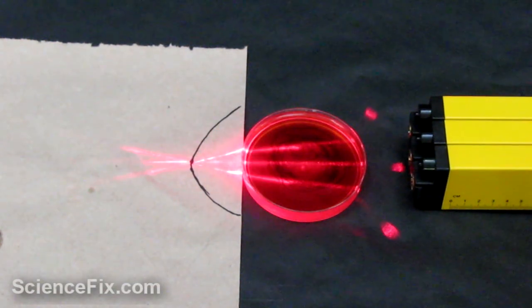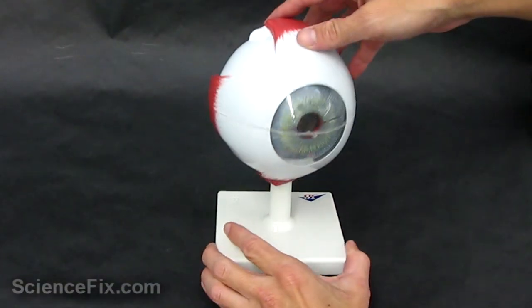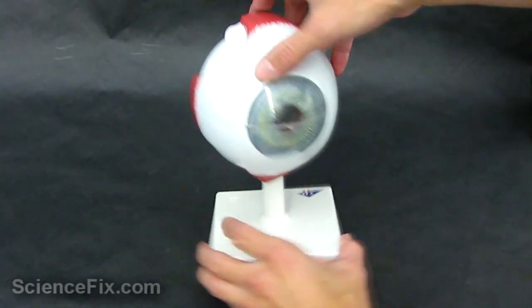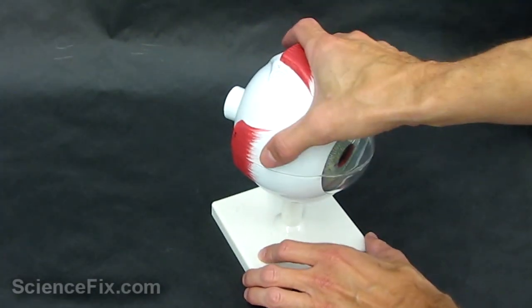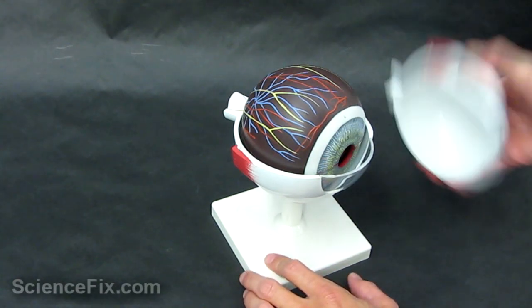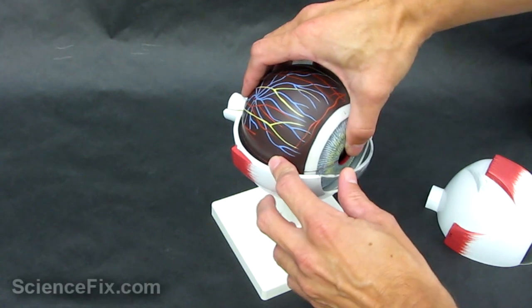Here we have a model of an eyeball. You can see the front of the eyeball. We have the cornea, which is the surface of the eyeball. We're going to take off the top layer of the eyeball, and we're going to see the next layer in. You see the iris and the pupil.